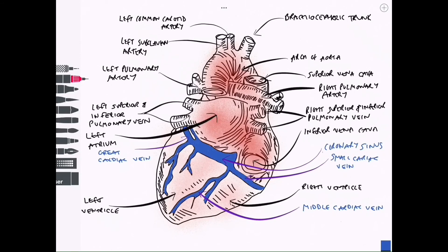The major vessel that drains the posterior surface is actually the middle cardiac vein, which we can see running almost down the centre of the posterior surface. That drains into the coronary sinus.